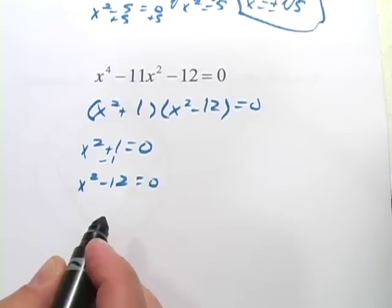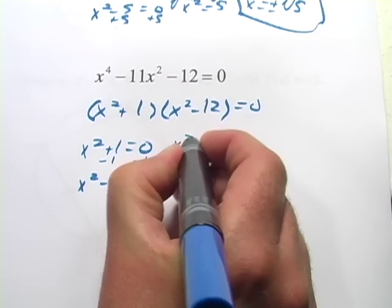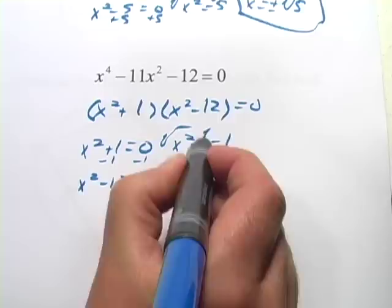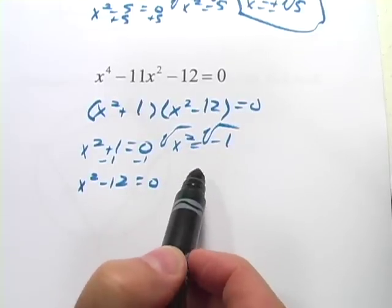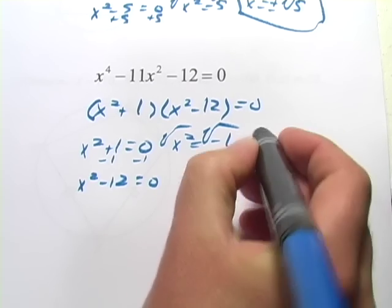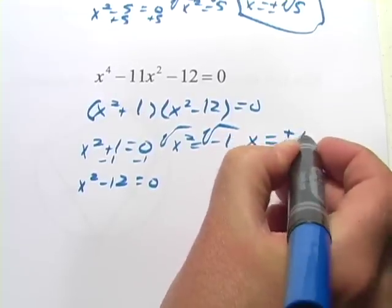To get x squared alone, I'm going to subtract 1 from each side, and I get x squared equals negative 1. And then when I take the square root here, I have the square root of a negative 1. And you might remember that's an imaginary number. The square root of negative 1 we call i. So the answers here are going to be x equals positive or negative i.